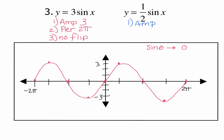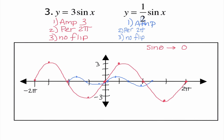The second graph is y equals 1/2 sine x. This time our amplitude is 1/2. The period is still 2 pi because our B value is 1, and there is no flip. It still starts at 0, but the amplitude is only 1/2, so we just go up and down by 1/2. This shows what we have called previously a vertical stretch — that was the 3 sine x — and a vertical shrink, which was 1/2 sine x. The transformations we learned in earlier chapters still apply to these functions.